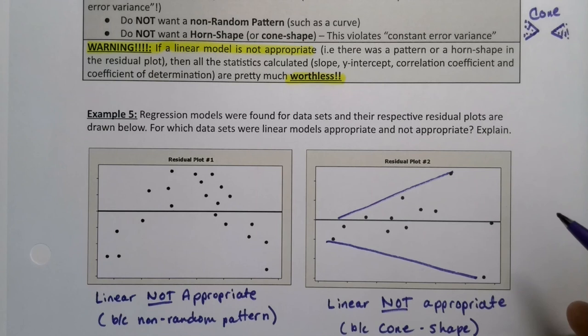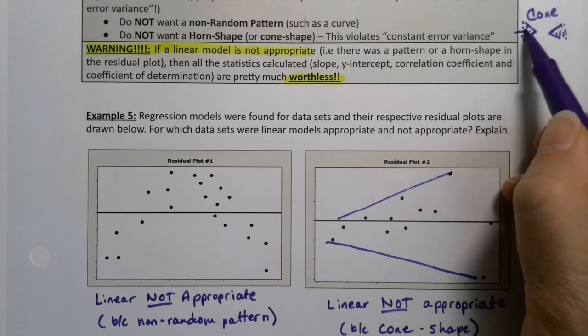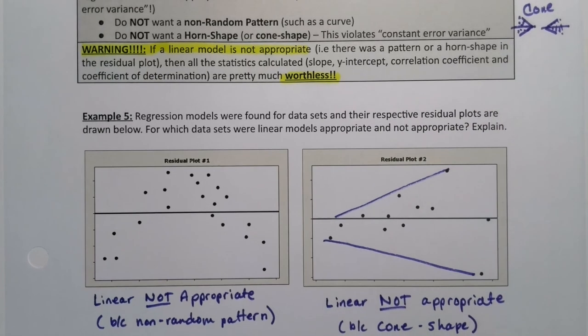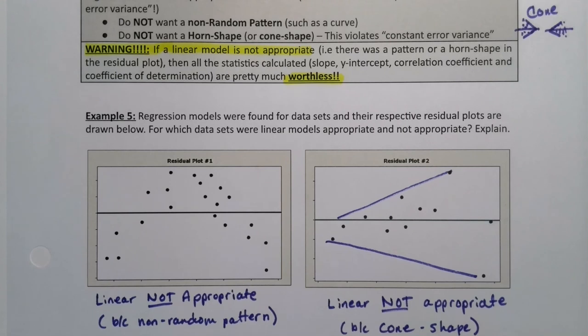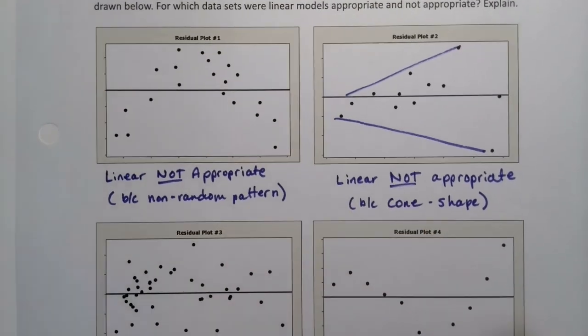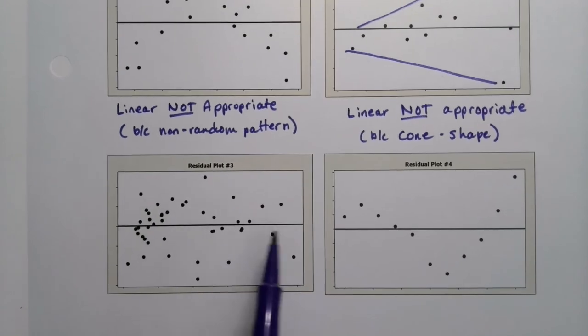So, if you have dots kind of growing or shrinking, either one. It makes it inappropriate because your horizontal line's coming right down the middle. And that's not good. So, this one has a cone shape. This one actually is okay.